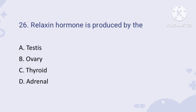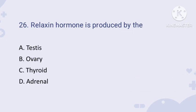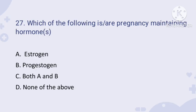Question number twenty-six: relaxin hormone is produced by which gland? The correct answer is ovary. The ovary produces relaxin hormone at a later stage of pregnancy. The ovary actually produces three hormones: estrogen, progesterone, and relaxin — and relaxin is the only hormone produced by the ovary during pregnancy.